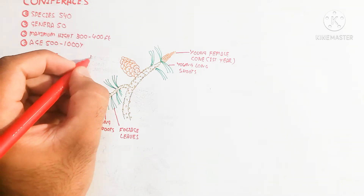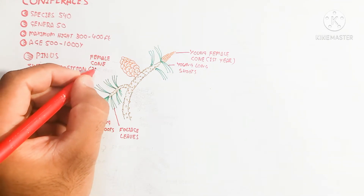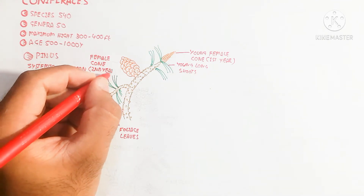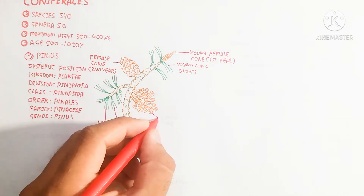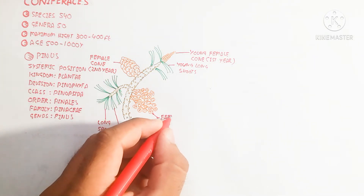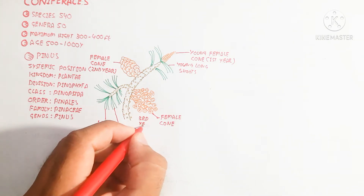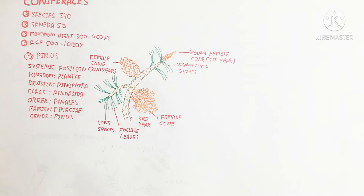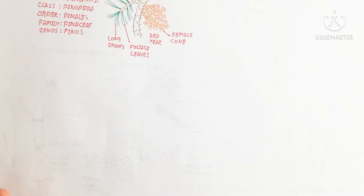After the first year, the young long shoot is attached to the cone, and you can see the female cone at the second year and third year stages shown in the figure. In the next video we will discuss about the structure and function of the female and male cone.